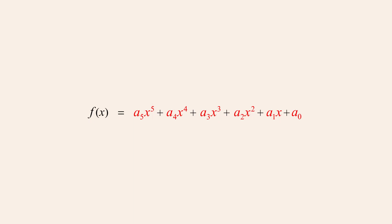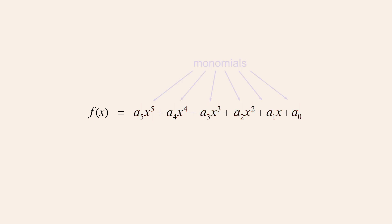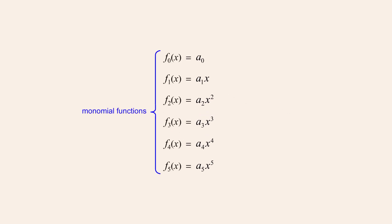A polynomial is a sum of one or more terms called monomials. If we think of each monomial as a separate function, then a polynomial function can be thought of as a sum of these monomial functions. Monomials have the form a times x to the nth power, where a is a non-zero positive or negative constant, and x can be any real variable with a non-negative integer exponent.